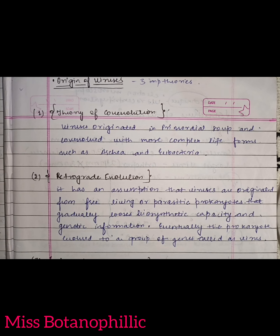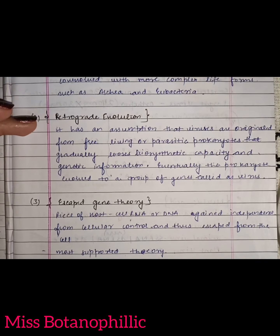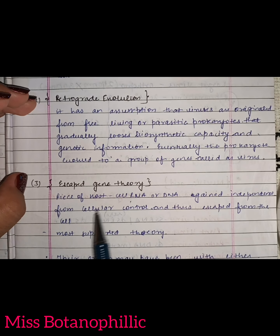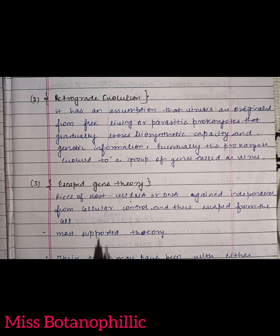I have explained three theories which are the most important in the field of virology and which explain the origin of the virus. First is the theory of co-evolution, the second is retrograde evolution theory, and the third is escape gene theory.